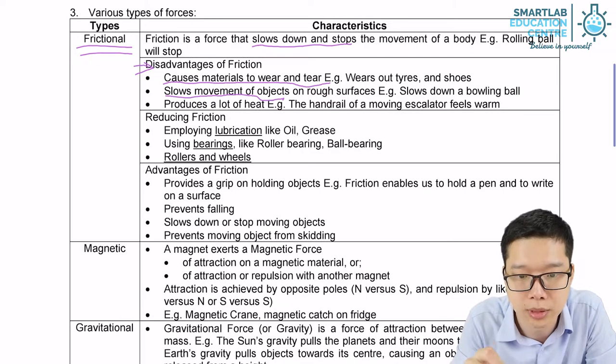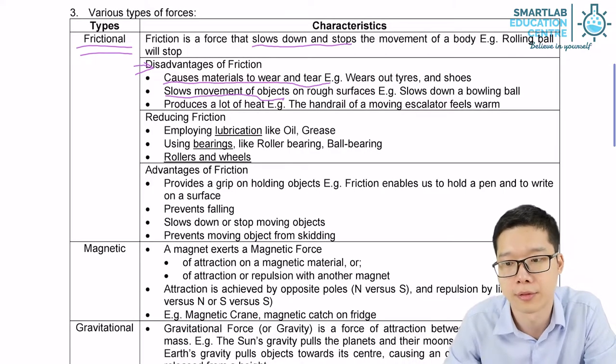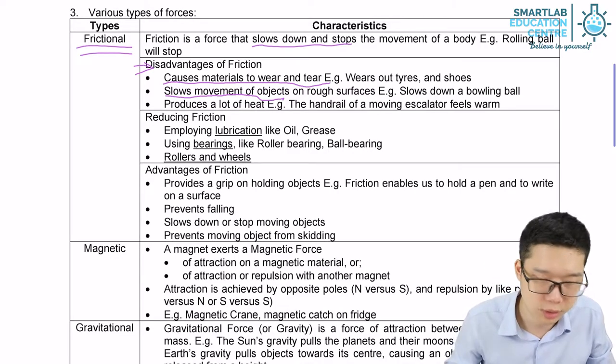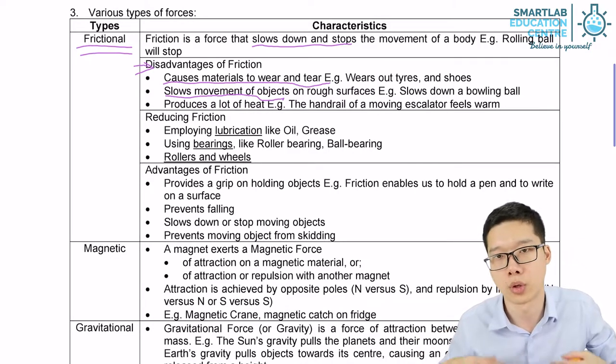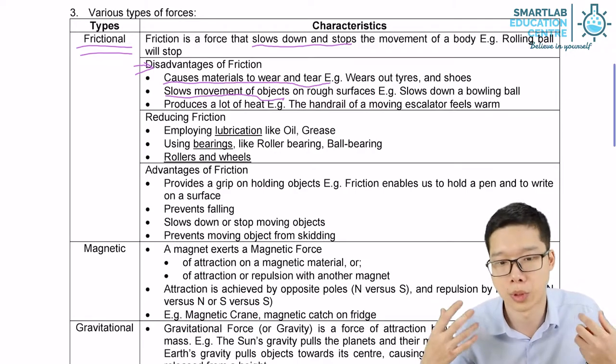Second one, it slows down the movement of an object. For example, if you're driving a car due to the frictional force, it will cost you more energy. It will cost you more petrol.